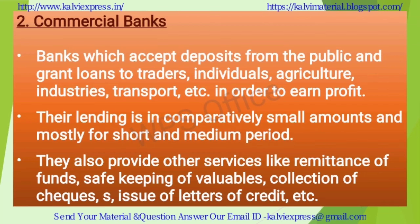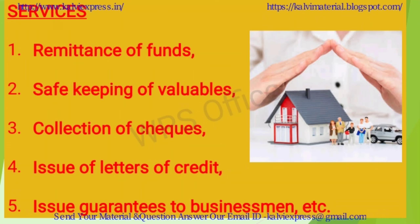Commercial banks basically accept deposits from the public and give loans to third parties like traders, or provide personal loans to the general public who have an account with them. Giving loans is the primary source through which they earn income and profit. The lending capacity of commercial banks is comparatively small, and they mostly give short-term and medium-term loans.